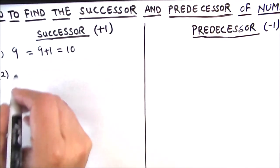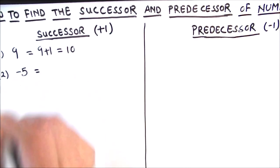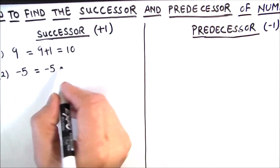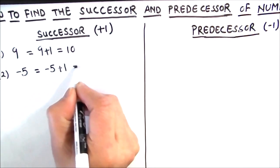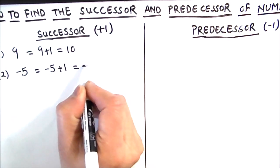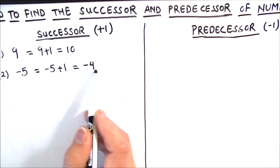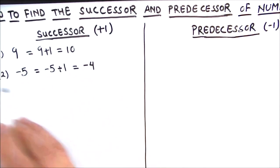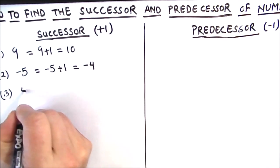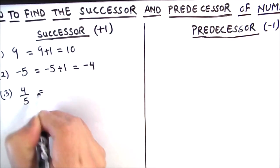Let's take an integer: negative 5. For finding the successor, we are going to add 1 to negative 5, so negative 5 plus 1 will give us negative 4. The successor of negative 5 is negative 4.